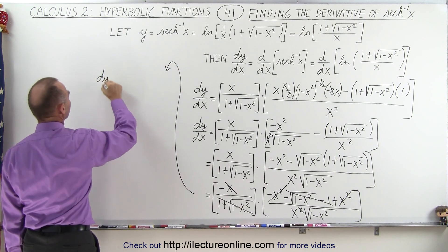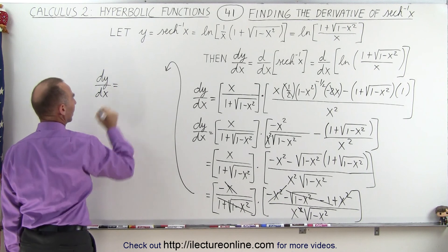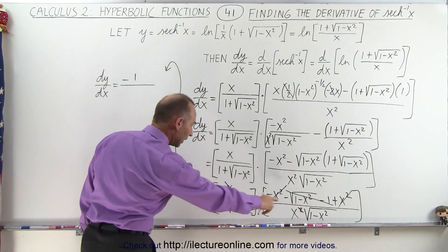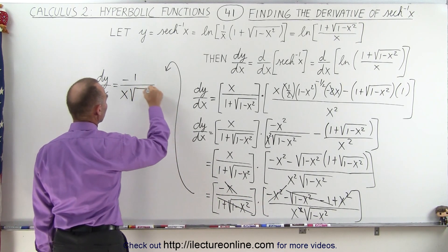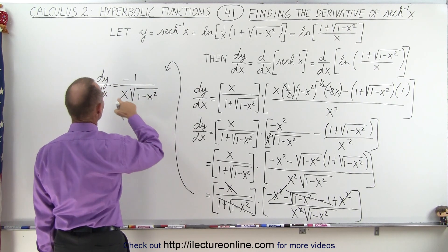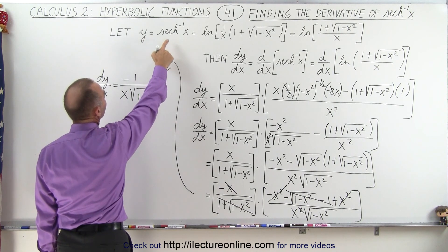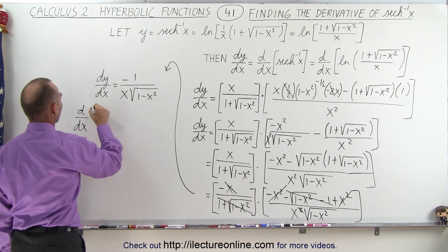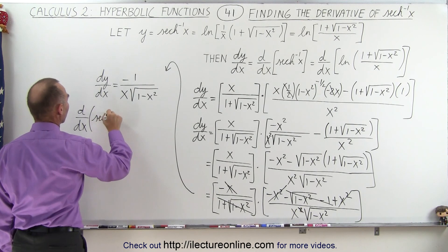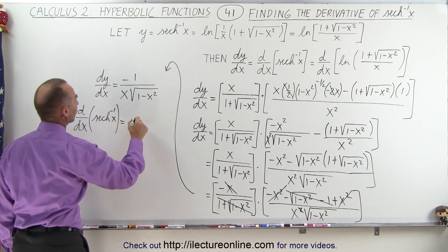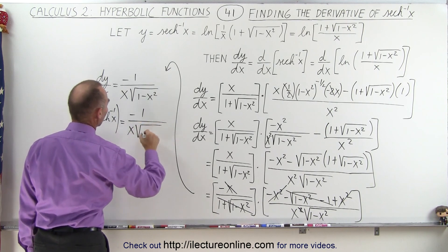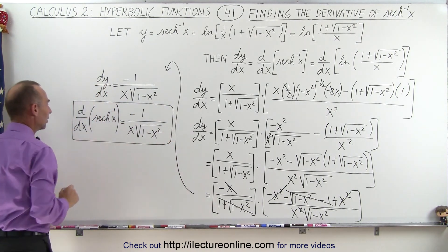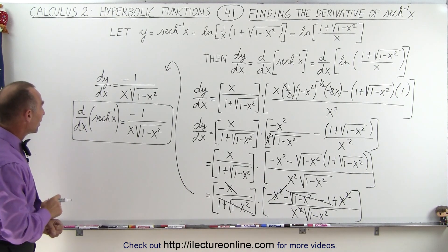Finally, we can write that dy/dx — the derivative of y with respect to x — is equal to minus 1 divided by x times the square root of 1 minus x squared. Since dy/dx equals the derivative of the inverse hyperbolic secant of x, we have: d/dx of the inverse hyperbolic secant of x equals minus 1 divided by x times the square root of 1 minus x squared.